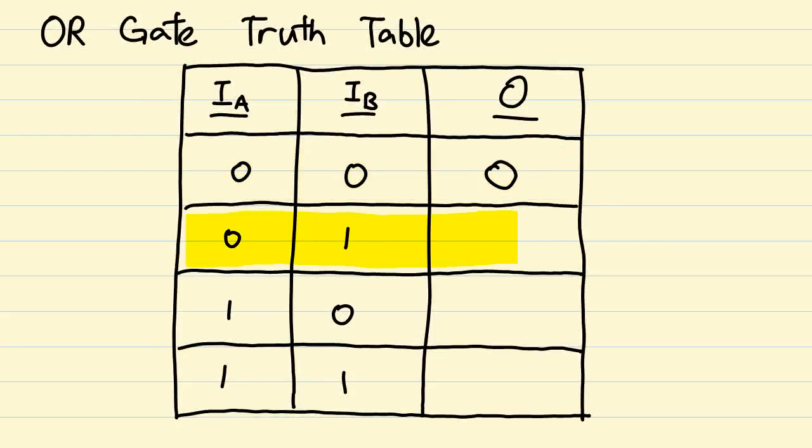If the first input is true, the rule is fulfilled, the output is true. Same goes if the second input is true, the rule is fulfilled as well, and the output is also true.